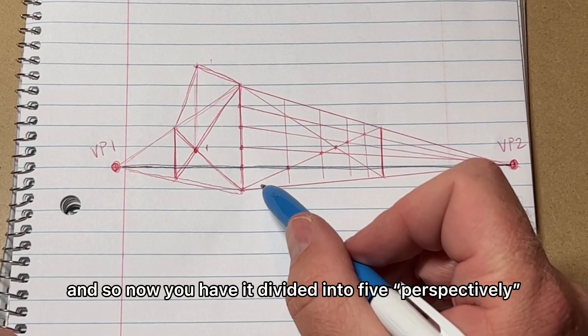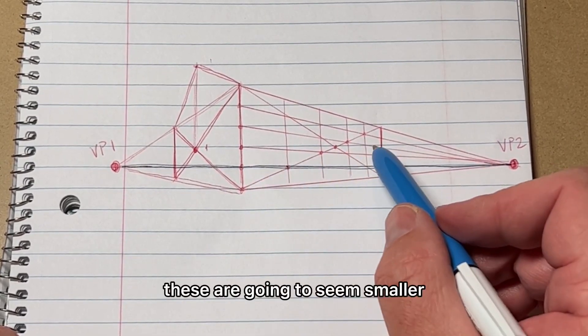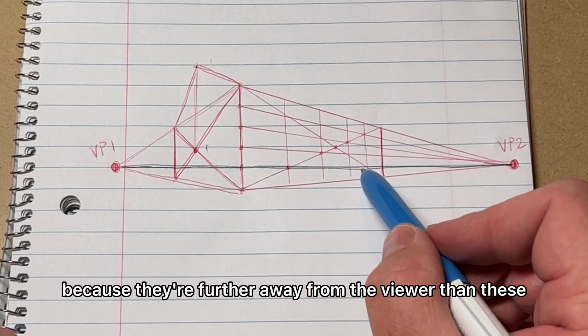And so now you have it divided into five prospectively equal increments. But of course, visually these are going to seem smaller because they're further away from the viewer.